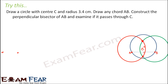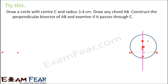The two circles intersect at two points. Join these two points, and you see that the line passes through the center C of the circle. So the perpendicular bisector of any chord of a circle passes through the center. The concept remains the same — a chord is also just a line segment.